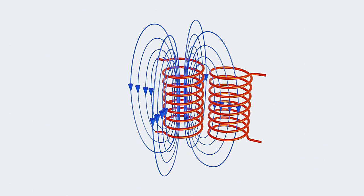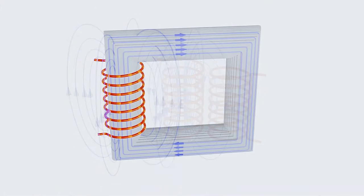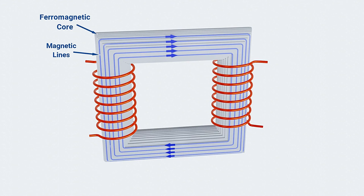We can see that only few magnetic lines are linked with the coil, and the rest are wasted. To concentrate all the magnetic lines, a ferromagnetic core is used in between the coils.